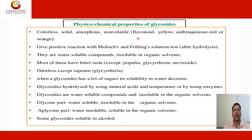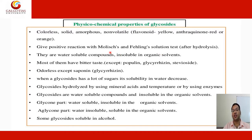The physicochemical properties of glycosides: basically they are colorless, solid, amorphous, non-volatile, and alkaline. Flavonoids are yellow, and anthraquinones are red or orange in color. They give a positive reaction with Molisch's and Fehling's solution because all carbohydrate-containing compounds give a positive Molisch's test. They are water-soluble compounds, insoluble in organic solvents. Most have a bitter taste, except populin and glycyrrhizin in steviosides. Most are odorless, except saponin and glycyrrhizin.